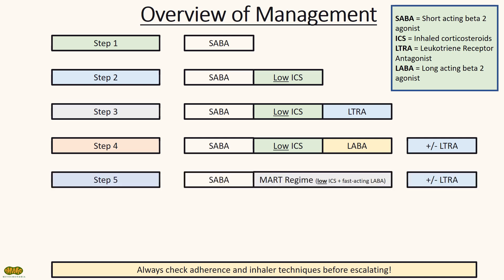Step 5 would be swapping out the low-dose inhaled corticosteroids and the long-acting beta-2 agonist for the MART regime. The MART regime stands for Maintenance and Reliever Therapy, and the patient will use it as a prevention therapy and during acute attacks as well. The regime in step 5 contains a low-dose inhaled corticosteroid and a fast-acting, long-acting beta-2 agonist such as formoterol.